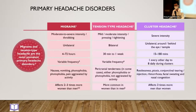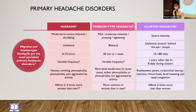The three main types of primary headache disorder — migraine, tension-type headache, and cluster headache — are summarized in a table, showing the duration of headache, associated features, aggravating factors, and relieving factors for each type.